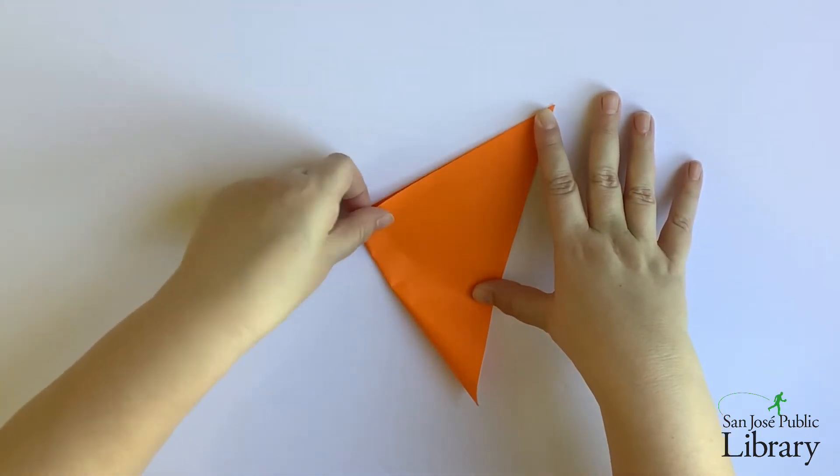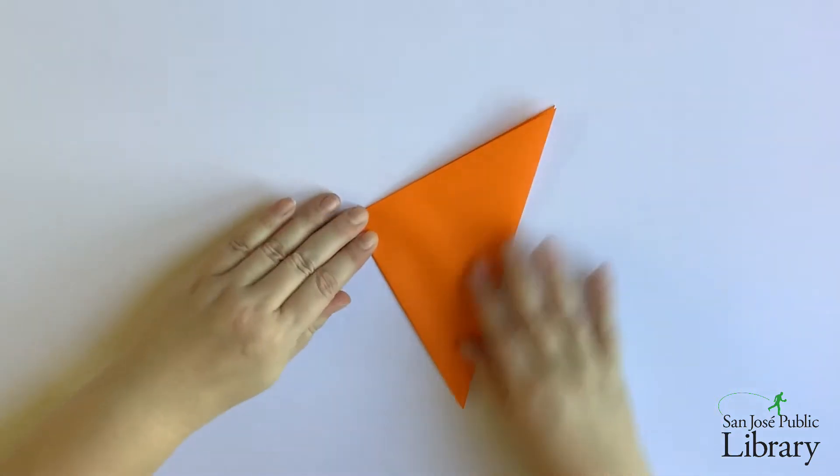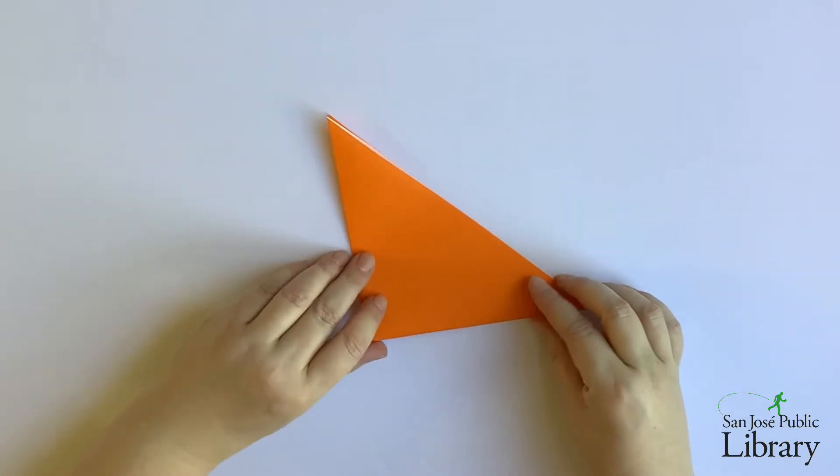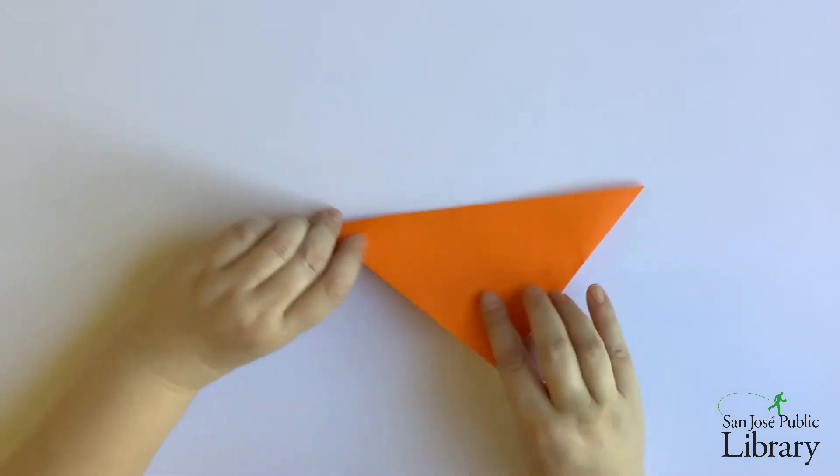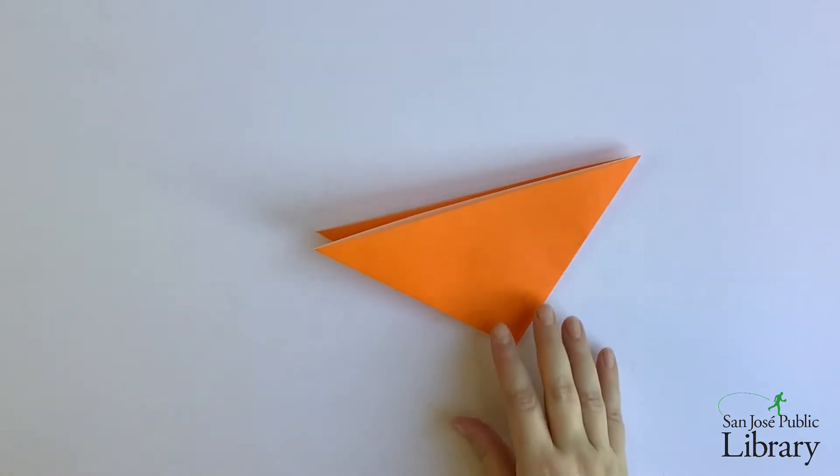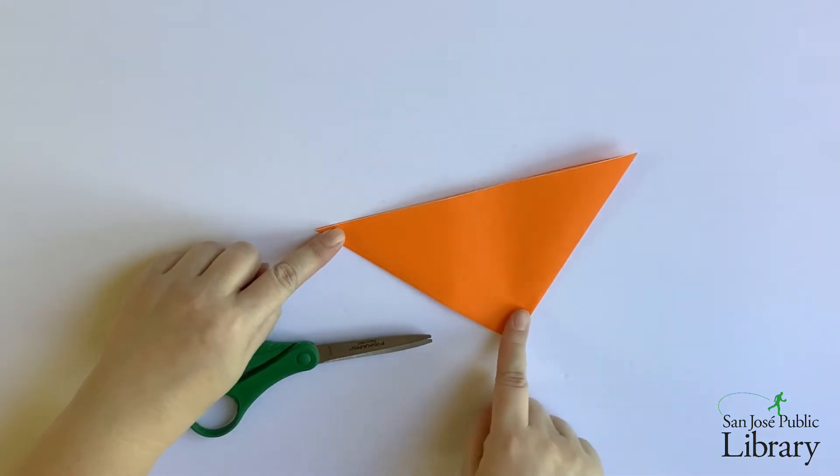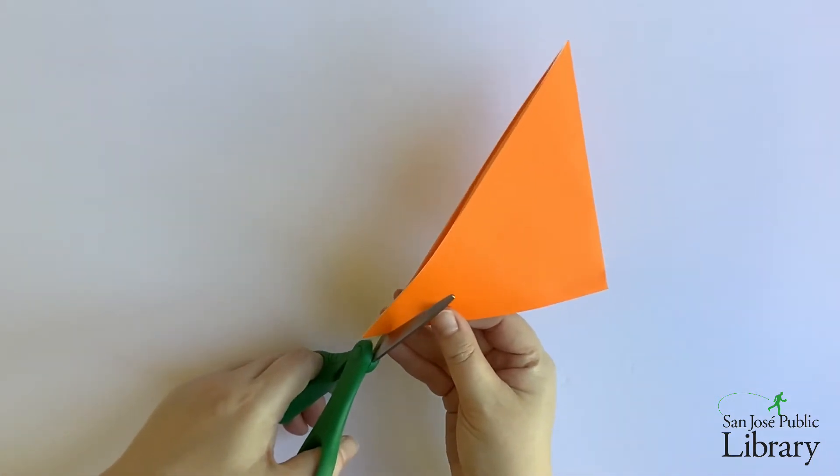When we make this second fold you can see that one of the short edges of our triangle has a single fold on it and the other has two folds. We're going to take our pair of scissors and cut this triangle into strips going from the edge with two folds up to but not through the edge with one fold.